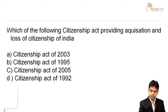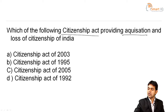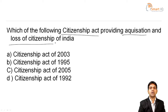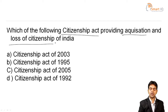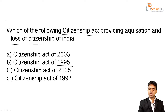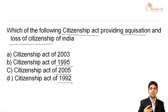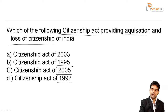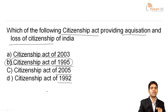Look at the first question: Which of the following Citizenship Acts provides for acquisition and loss of citizenship of India? Option A: Citizenship Act of 2003. Option B: Citizenship Act of 1955. Option C: Citizenship Act of 2005. Option D: Citizenship Act of 1992. The answer is B — the Citizenship Act of 1955 provides for acquisition and loss of citizenship of India.